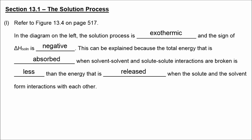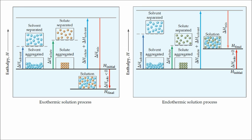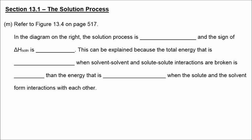Comparing the diagram on the left with the diagram on the right, we see that we finish at a higher enthalpy level than where we started. So the overall delta H of solution is positive — we have an endothermic solution process. The total energy absorbed when solvent-solvent and solute-solute interactions are broken is greater than the energy released when the solute and the solvent form interactions with each other.